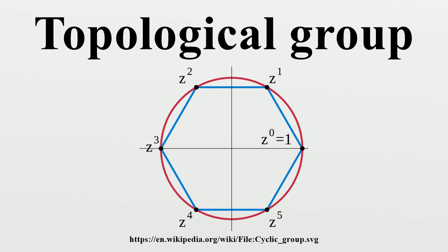Examples: Every group can be trivially made into a topological group by considering it with the discrete topology. Such groups are called discrete groups. In this sense,